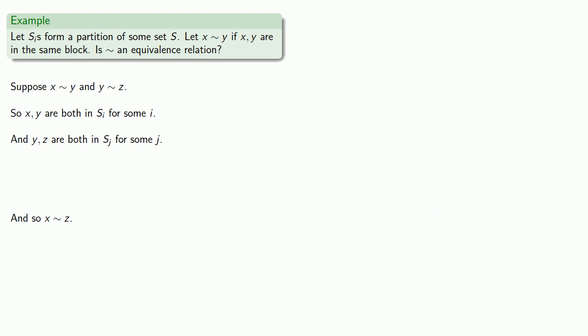And here's an important thing to notice. We change the index. Because while we know that both y and z are in the same block, we are not going to commit ourselves to being in the same block as x and y. Don't commit until you're sure. So we'd like to conclude that x is related to z. And that means we have to show that z is in si.